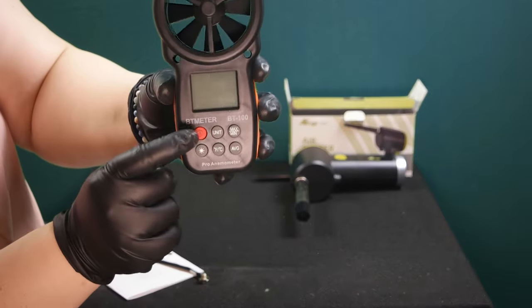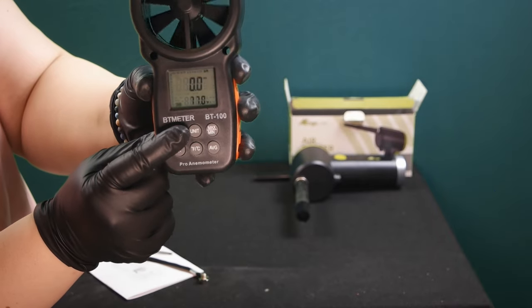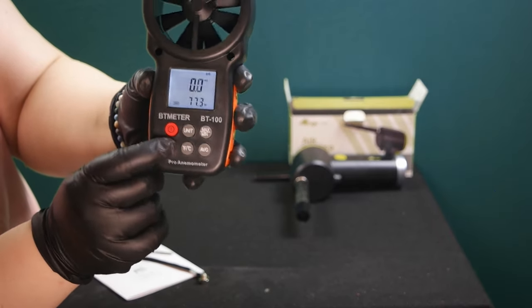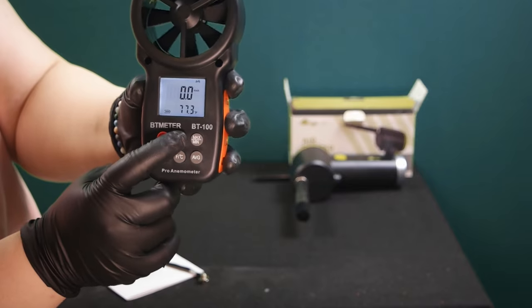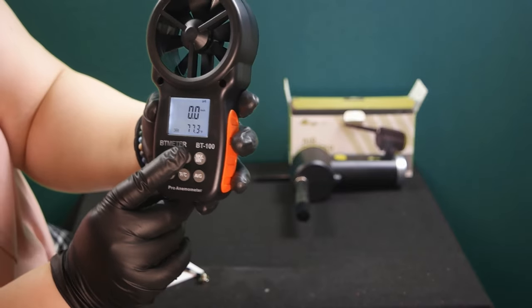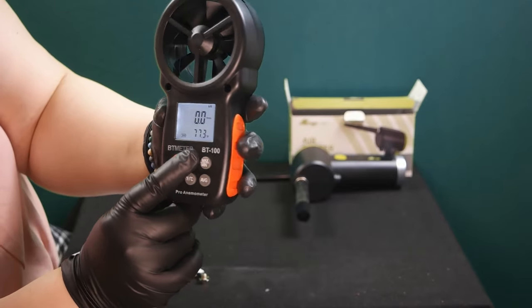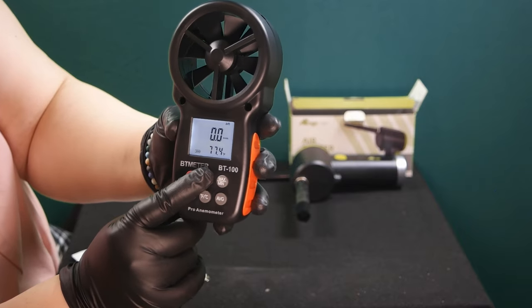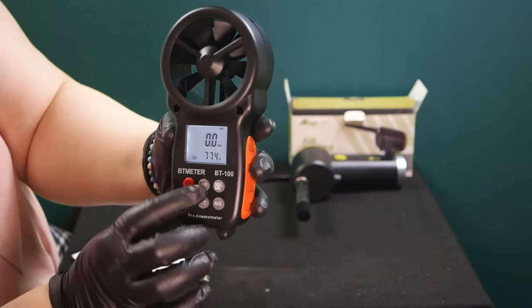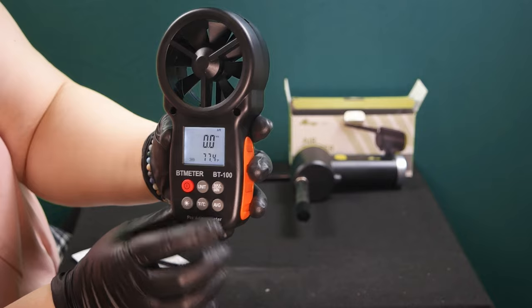Back to the front, we'll go through. This is your power button, clearly. You have a backlight, your unit button, which goes through meters per second, kilometers per hour, feet per minute, knots, and then miles per hour. It just cycles.